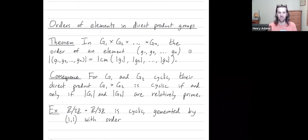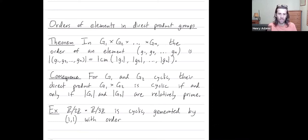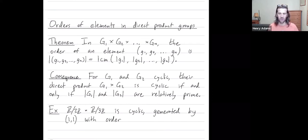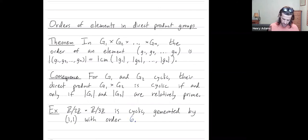So I've described this theorem in a product group: the order of an element is the least common multiple of the orders of the individual terms in each individual group. A consequence of this theorem is that if two groups are cyclic — G1 and G2 — then their direct product is cyclic if and only if their sizes are relatively prime. We saw in our first example that Z2 × Z3 is cyclic — it was generated by element (1,1), which we saw had order six.